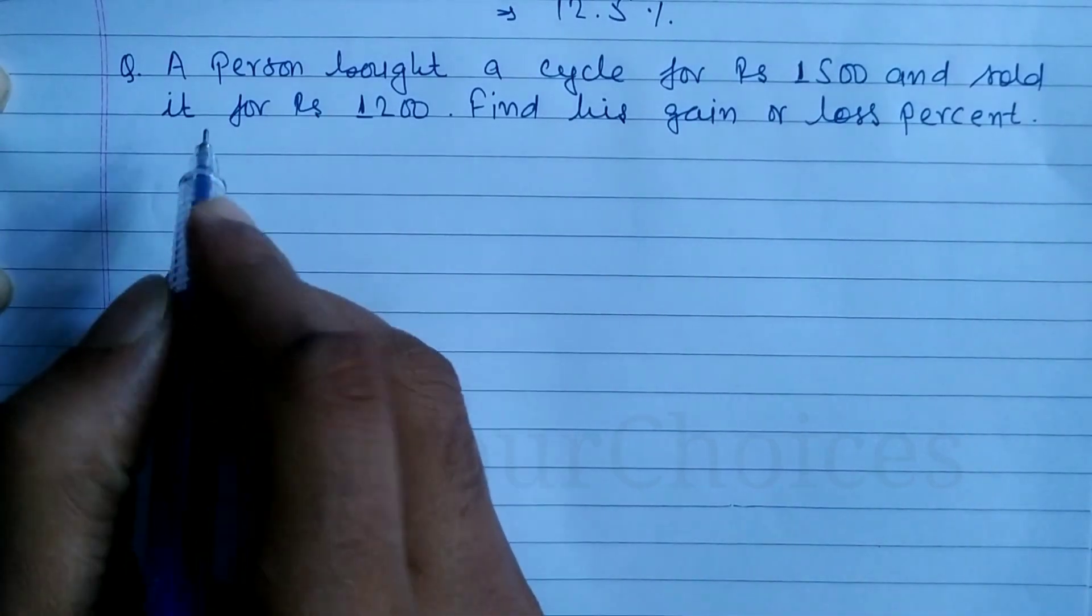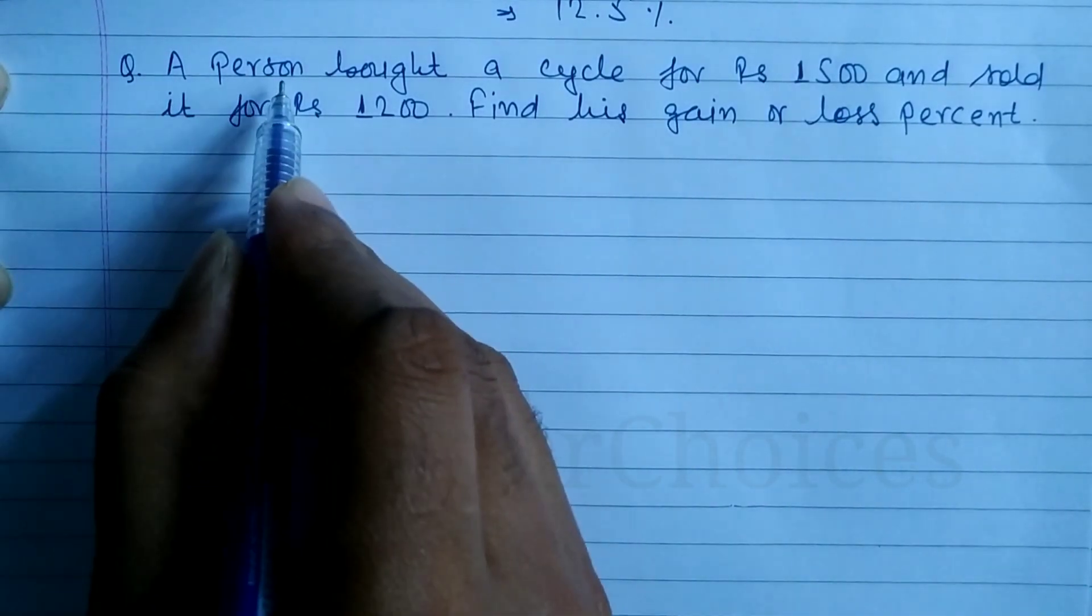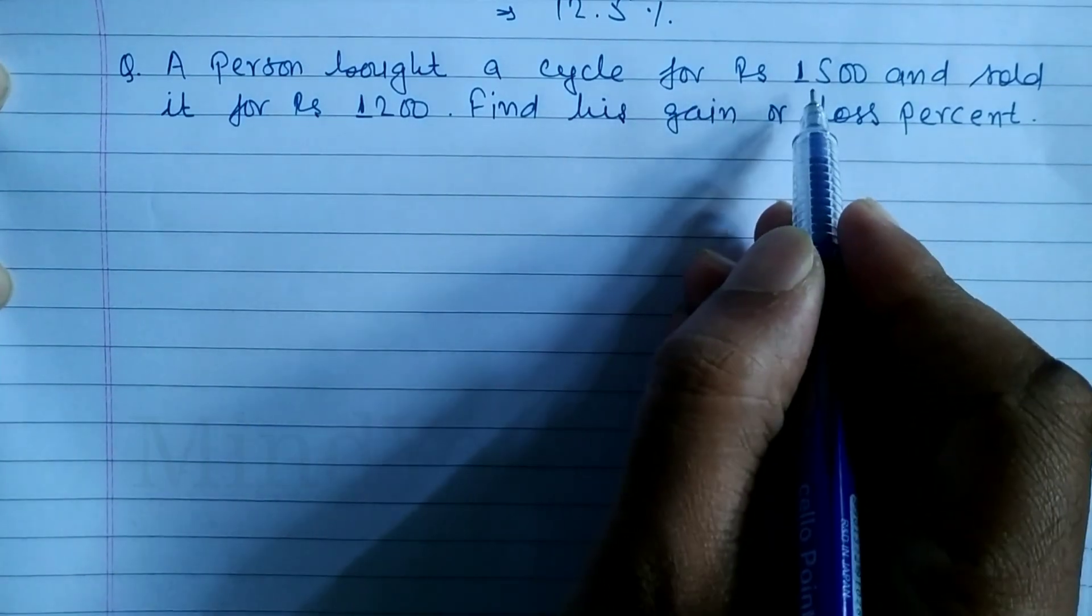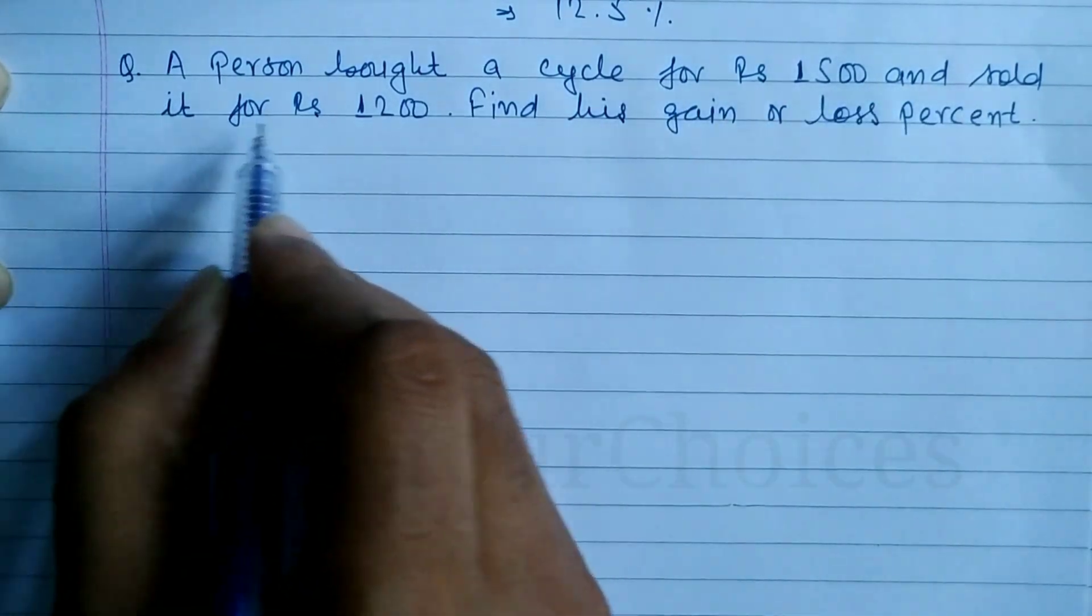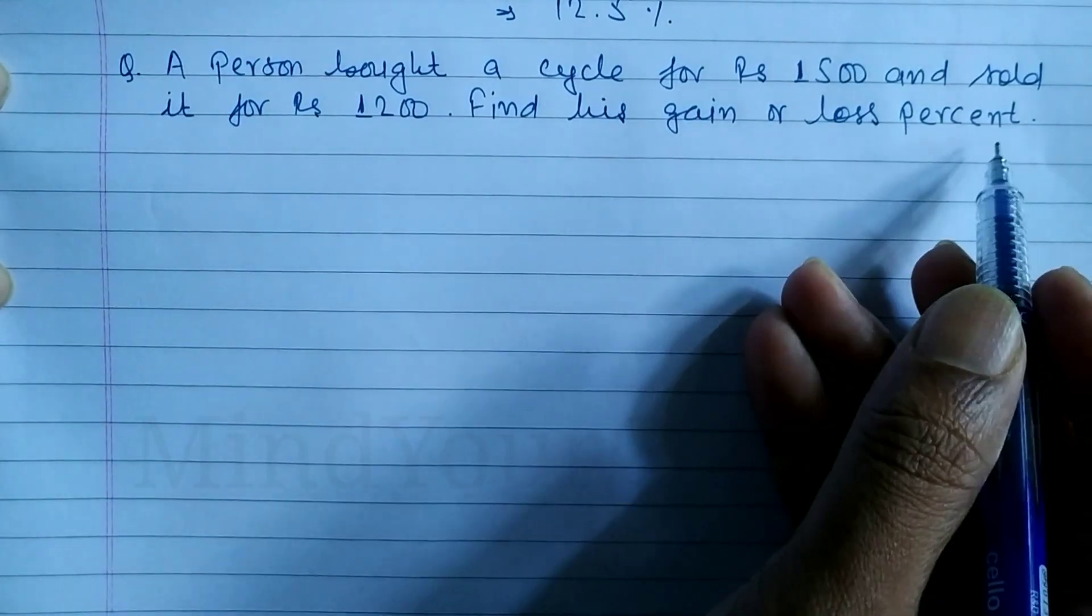Question class 8, profit loss. A person bought a cycle for rupees 1500 and sold it for rupees 1200. Find his gain or loss percent.